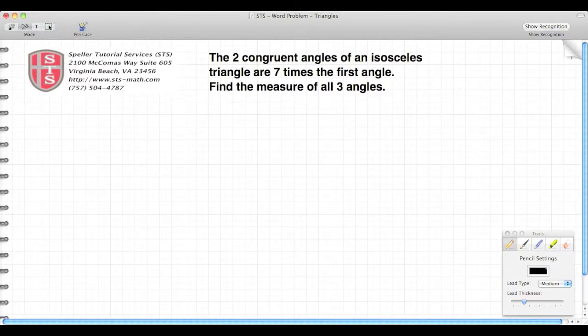The two congruent angles of an isosceles triangle are seven times the first angle. Find the measure of all three angles.